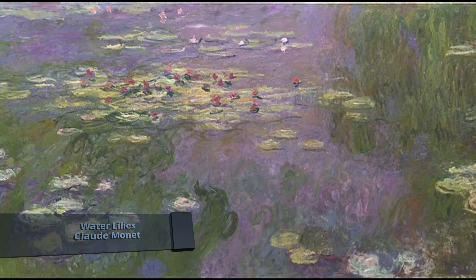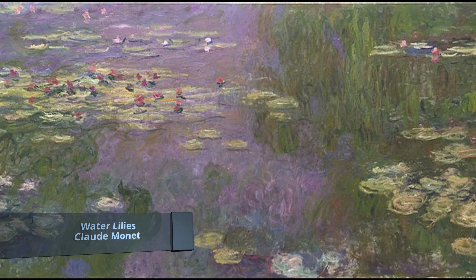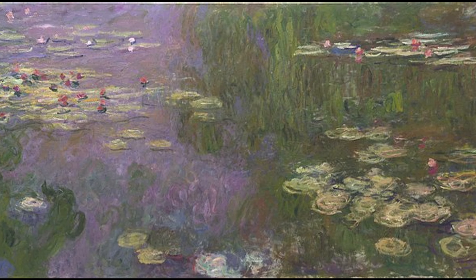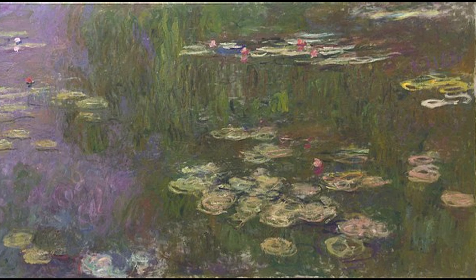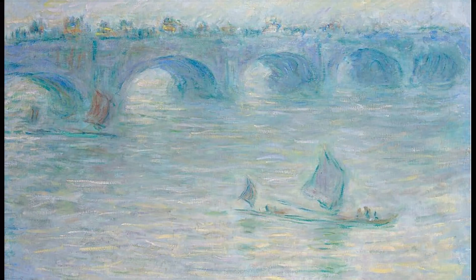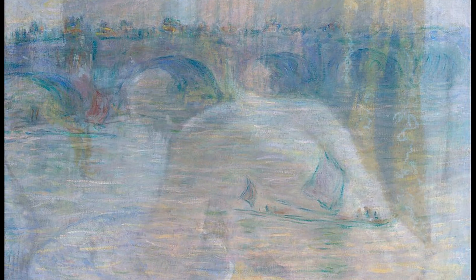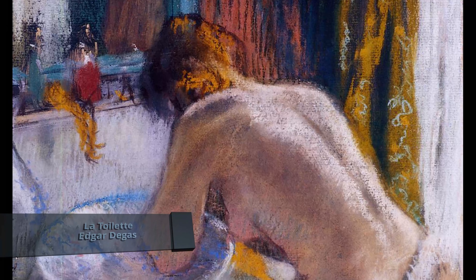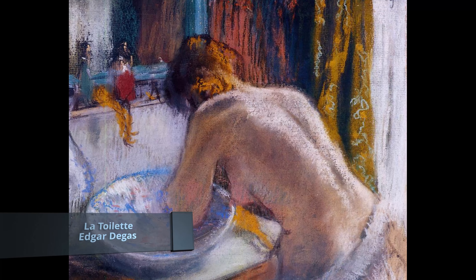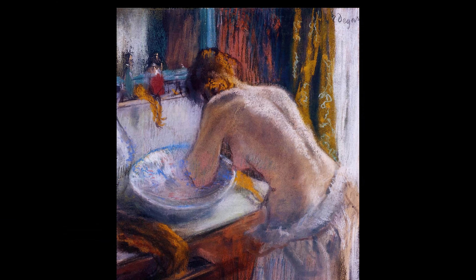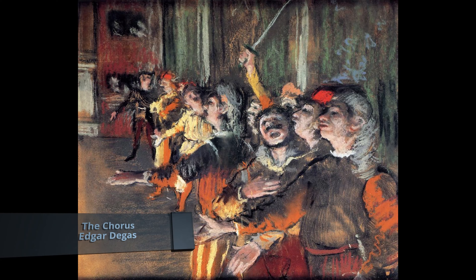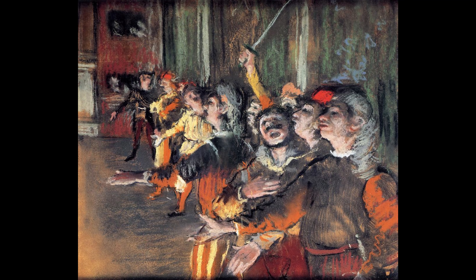Impressionism is another example of an art movement with a distinct style. This 19th century art movement is characterized by relatively small, thin, yet visible brushstrokes, open composition, emphasis on accurate depiction of light and its changing qualities — often accentuating the effects of the passage of time — ordinary subject matter, inclusion of movement as a crucial element of human perception and experience, and unusual visual angles. Impressionism originated with a group of Paris-based artists whose independent exhibitions brought them to prominence during the 1870s and the 1880s.